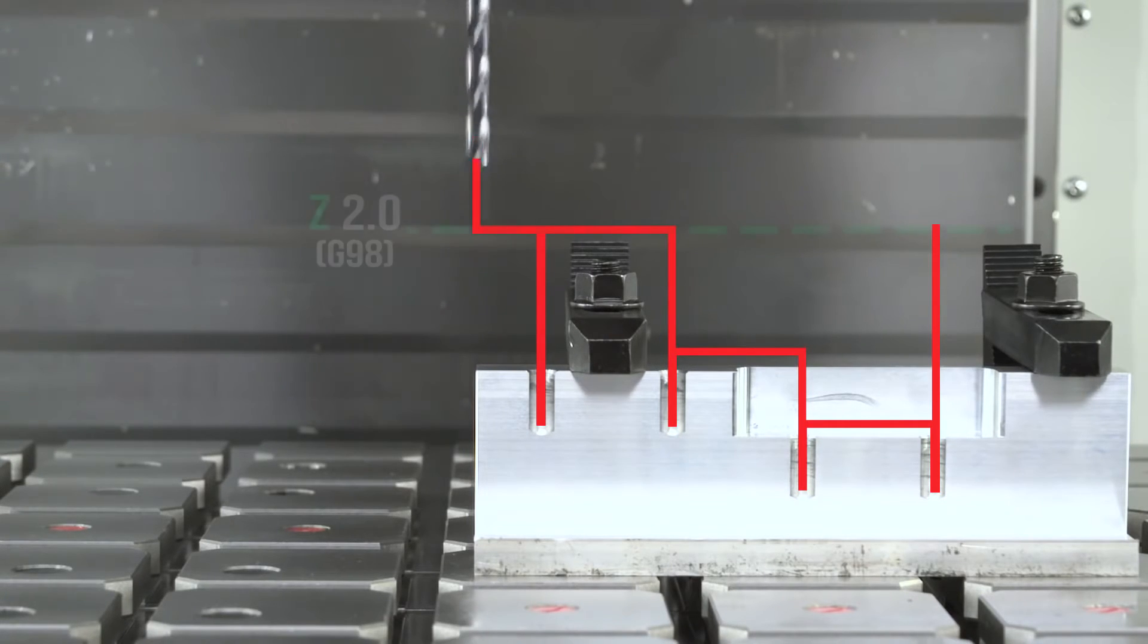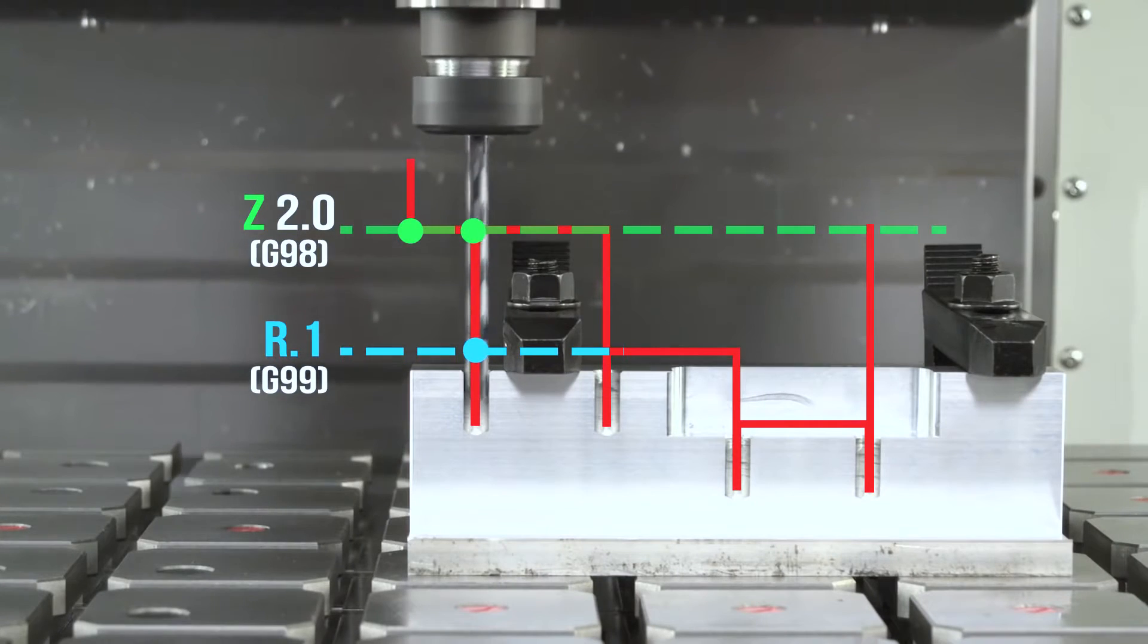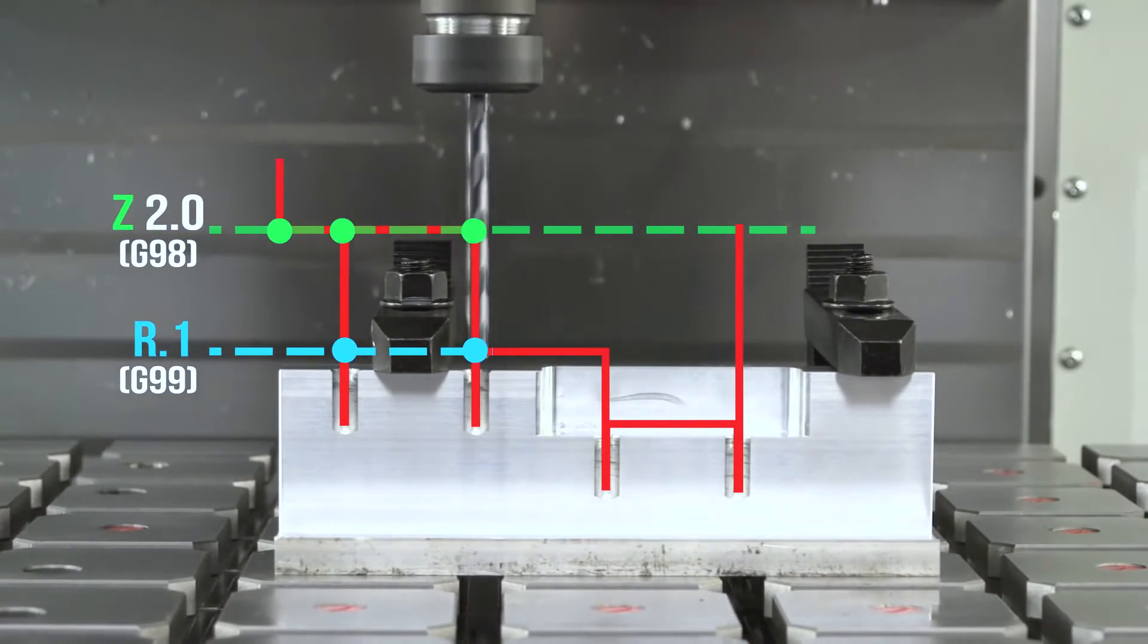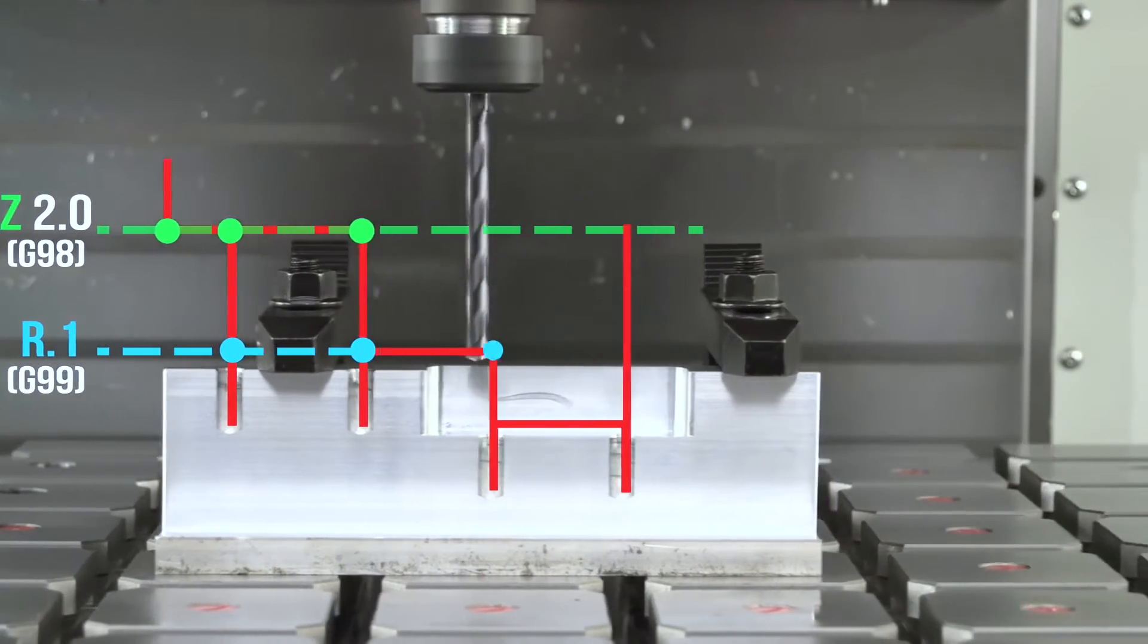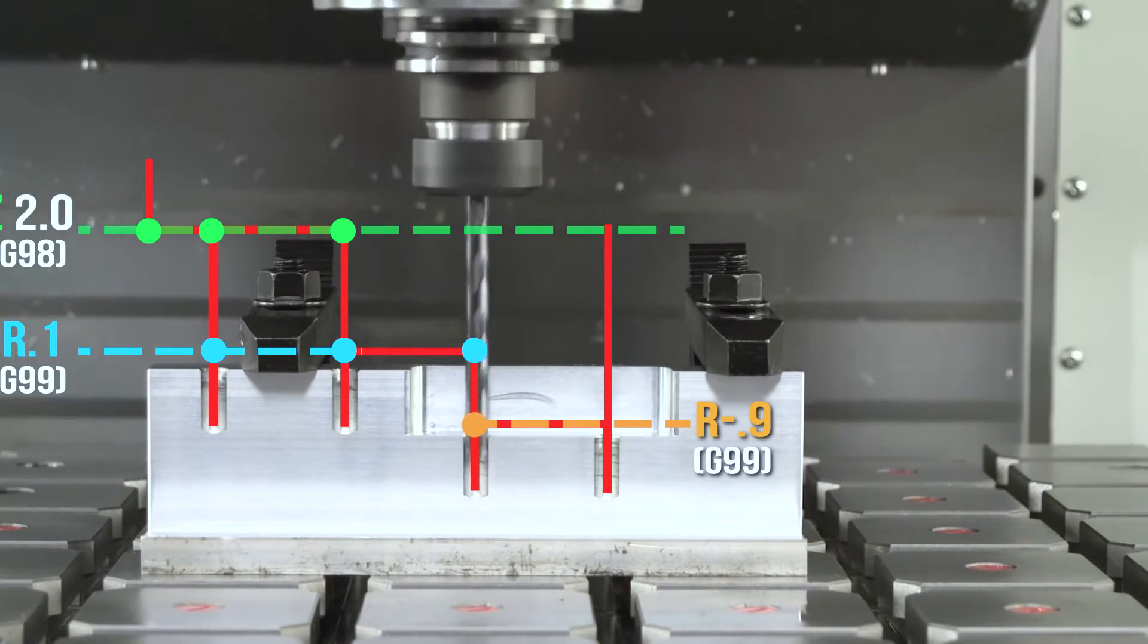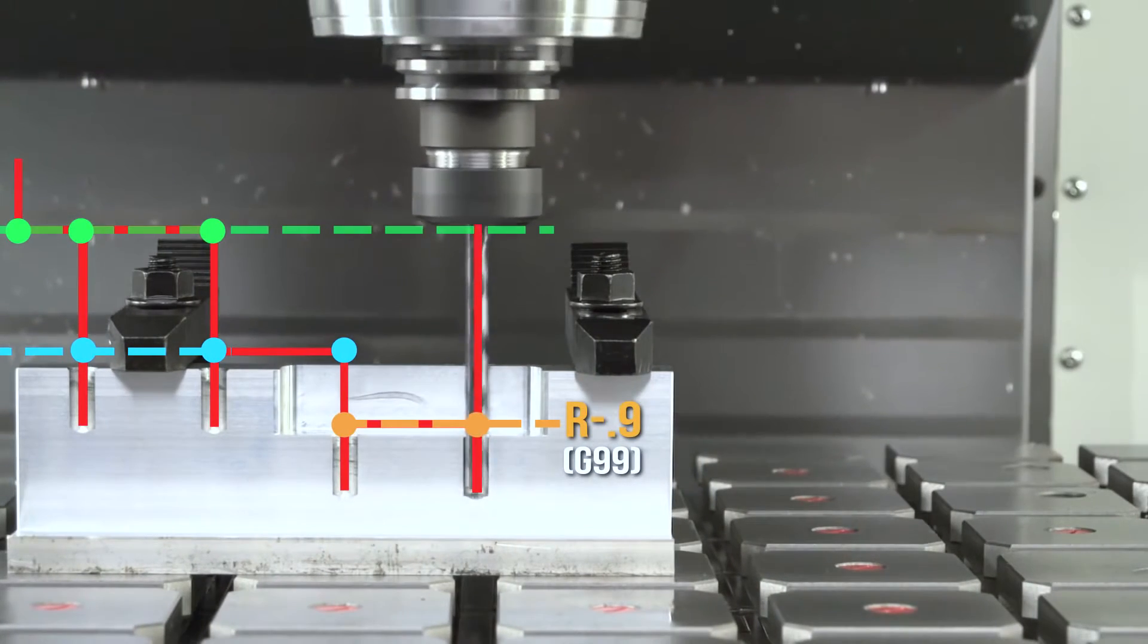So, we're using a G98 with a Z start point of two inches so it pops over that first clamp. And then, we use an R plane of minus 0.9 for those third and fourth holes so we avoid cutting air.